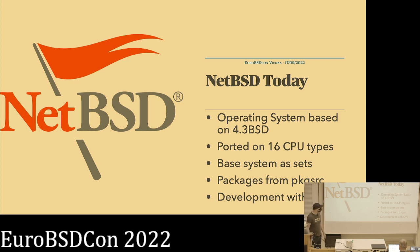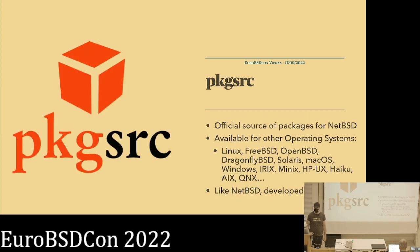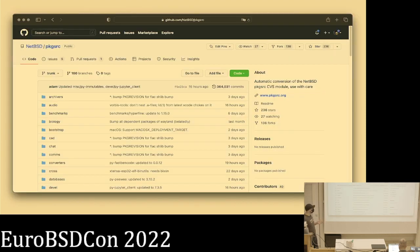Another noteworthy aspect is that NetBSD is still using CVS for development, just like PackageSource does. PackageSource is the official source of packages for NetBSD, but it's also available for other operating systems. 16 architectures are supported by NetBSD and also PackageSource, and on top of that, 23 other operating systems are supported by PackageSource. The project is also mirrored on GitHub through the automatic conversion project — use with care — inside the NetBSD organization.